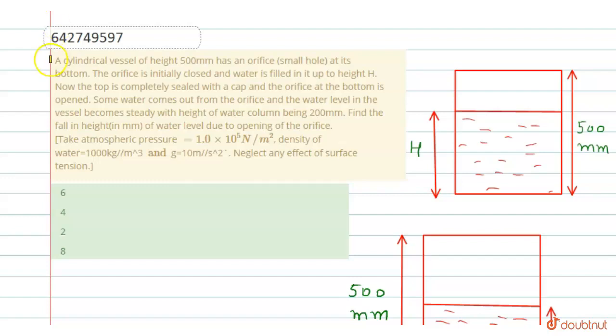A cylindrical vessel of height 500 mm has an orifice, a small hole, at its bottom. The orifice is initially closed and water is filled in it up to height h.